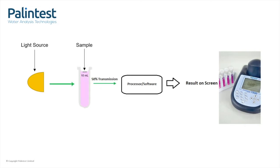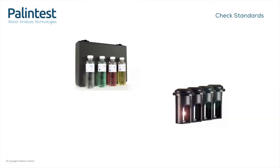if you had something that allowed 50% of light to pass through, you could place it in the photometer, press read, and if you get a result close to 50%, you know that your instrument is working just fine. And that is exactly what a check standard is.